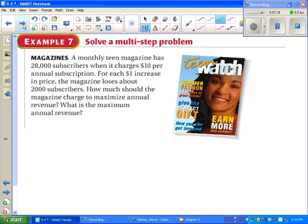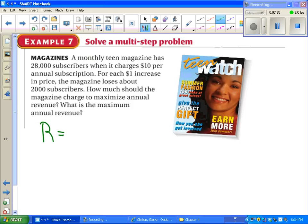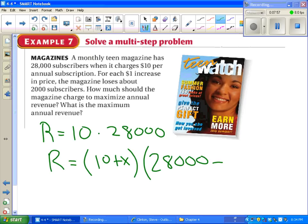Go ahead and pause the video again, try to understand what's going on in this problem, and then we'll talk it out. This one should look familiar to you, kind of like the go-kart problem. We've got a revenue that's originally $10 per magazine times 28,000 subscribers. Now it's telling us every time we increase the price by a dollar, so we extend maybe 10 plus x, that's how many dollars we increase by, we're going to lose some subscribers. We started with 28,000, and we're losing, for every dollar, 2,000 subscribers.